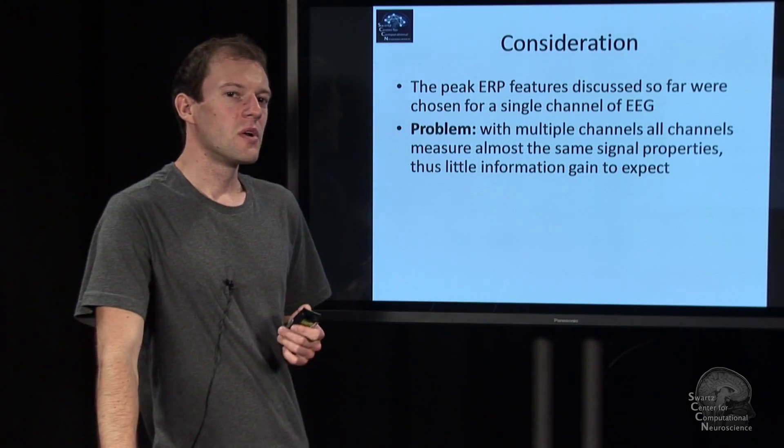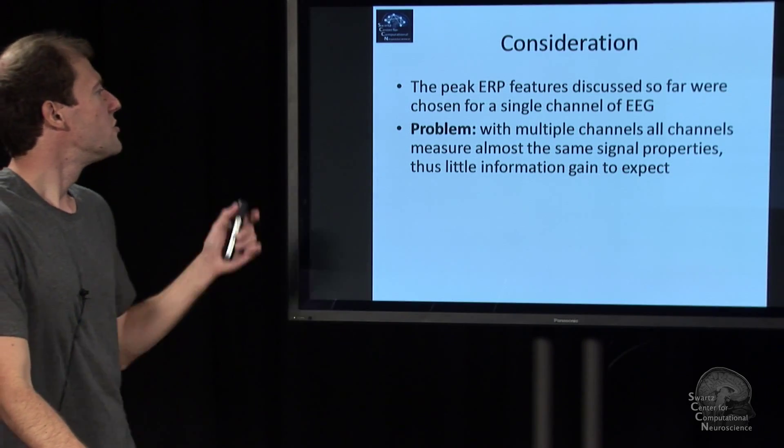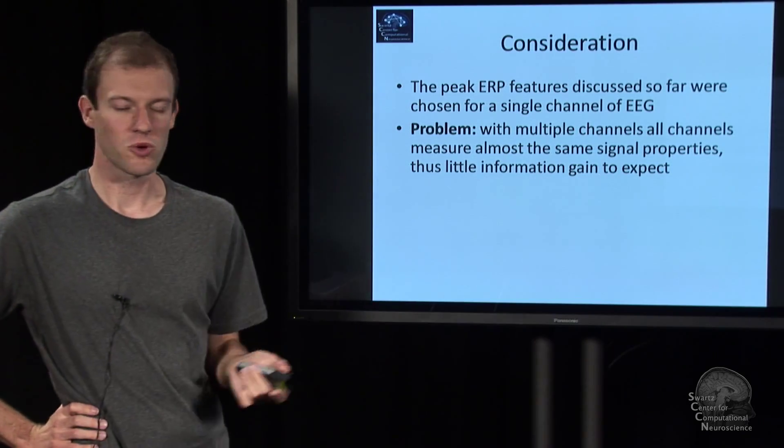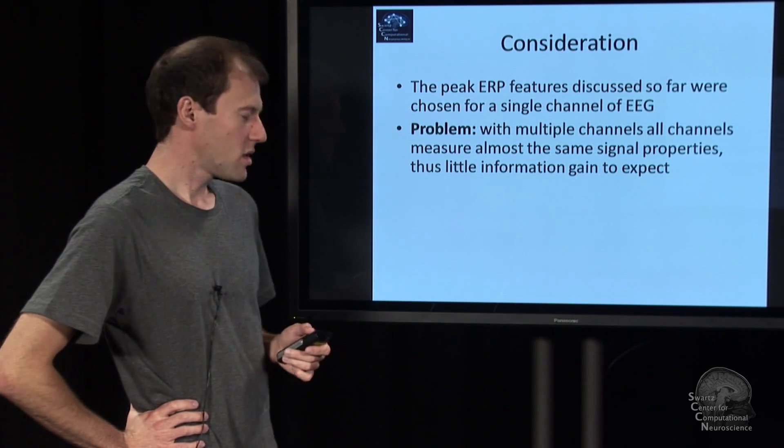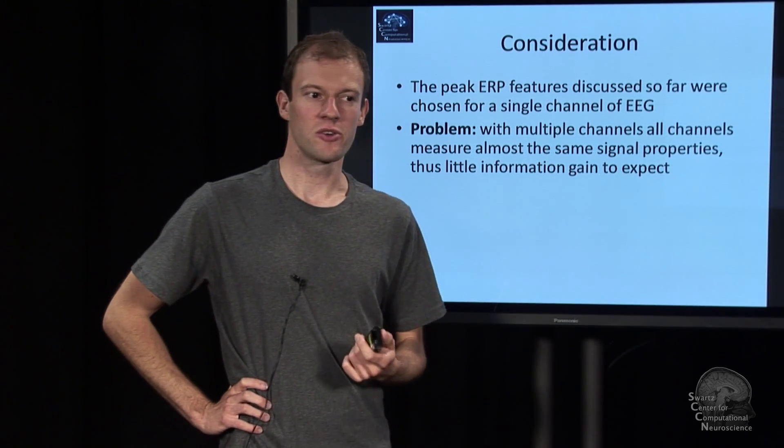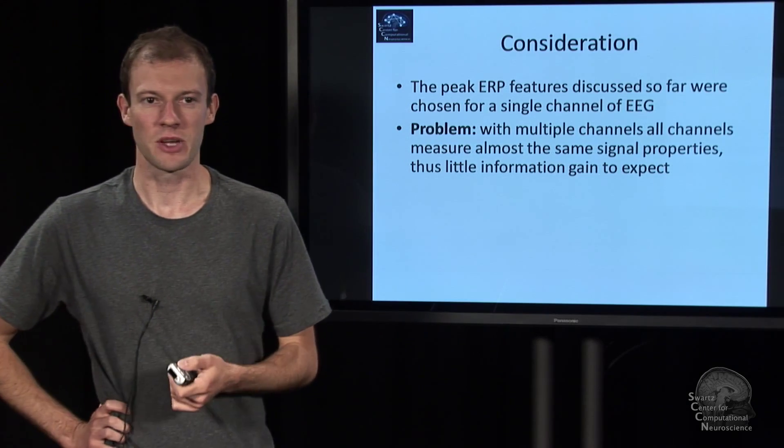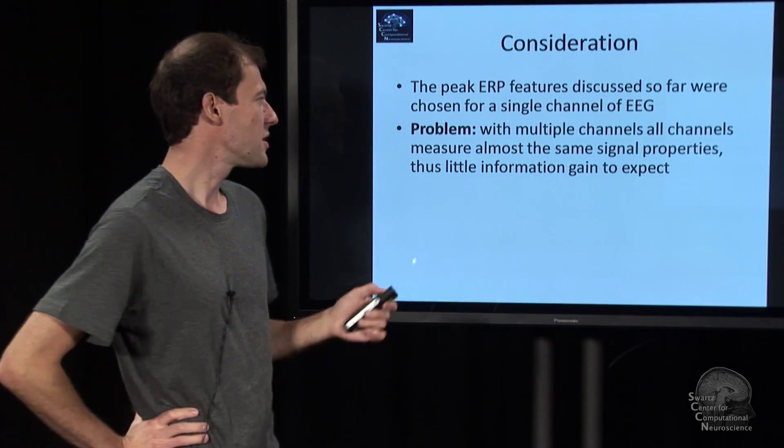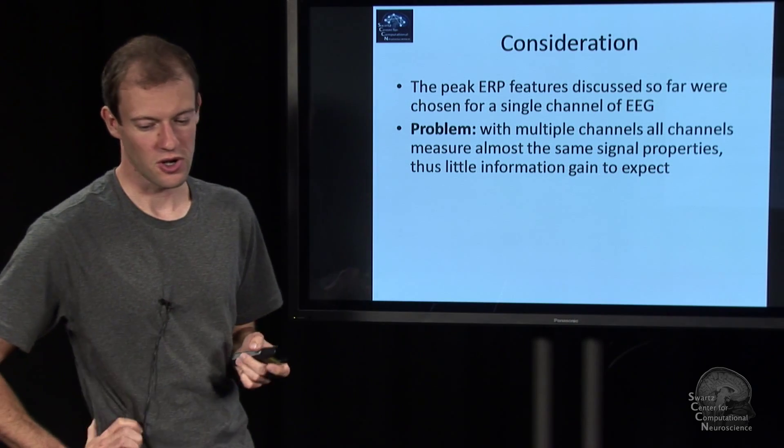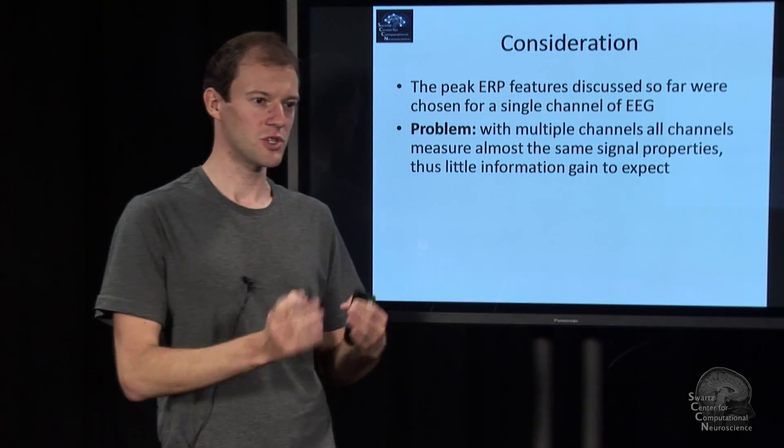So talking about these features that we used last time with the peak properties, these were okay for a single channel of EEG and for very aggressive dimensionality reduction. If we're having multiple channels, the peak features are almost always going to be the same for every channel.